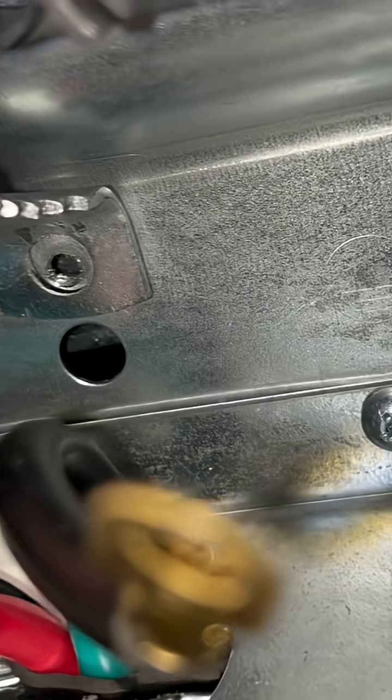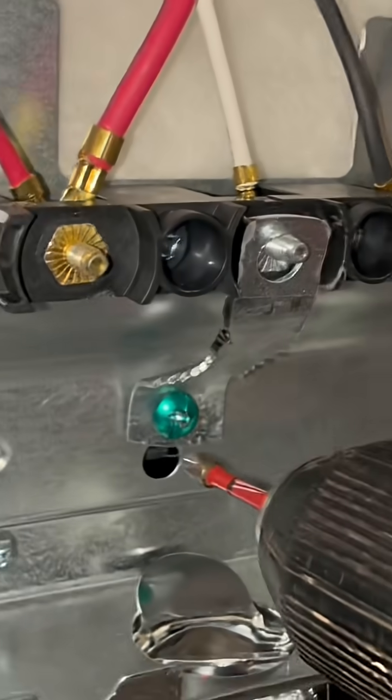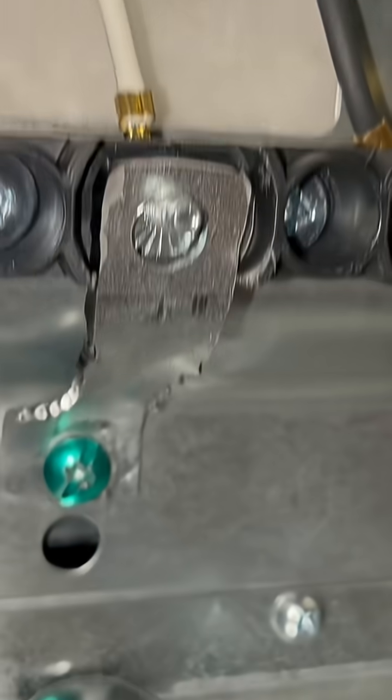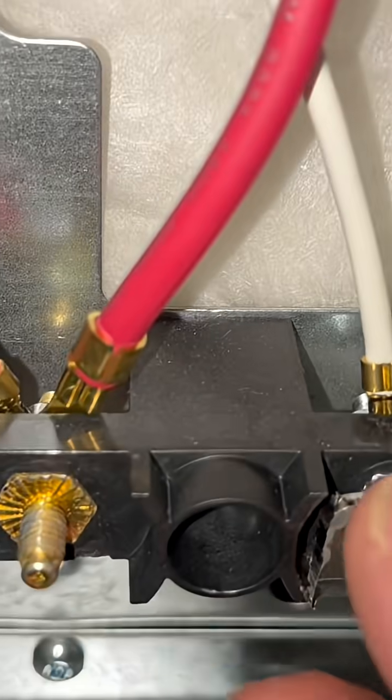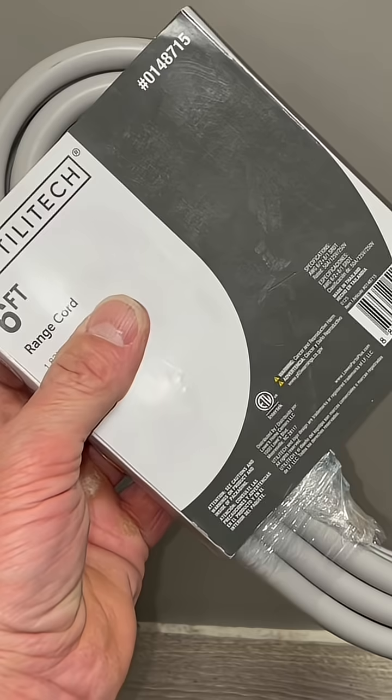Once I got it bent to fit and got the holes lined up, I tightened it down and put the fasteners in there to hold it nice and snug. Now I'm going to go ahead and put on this six-foot Utility Tech range cord.